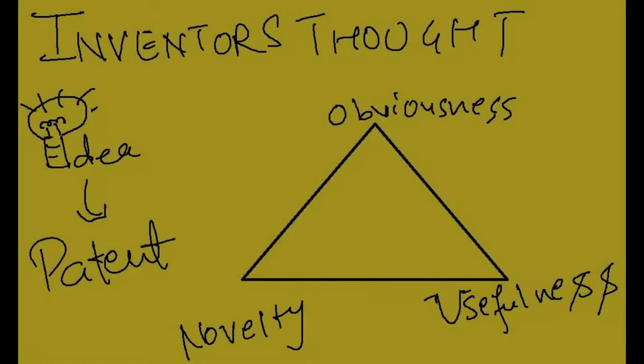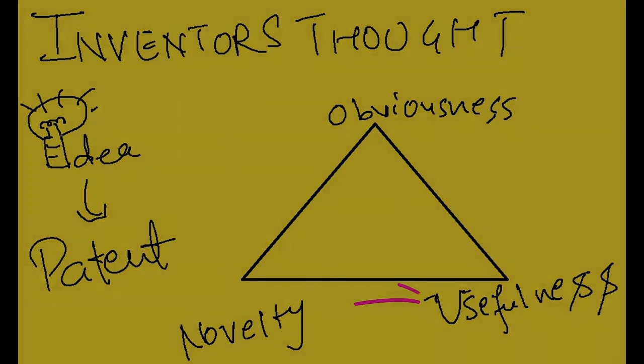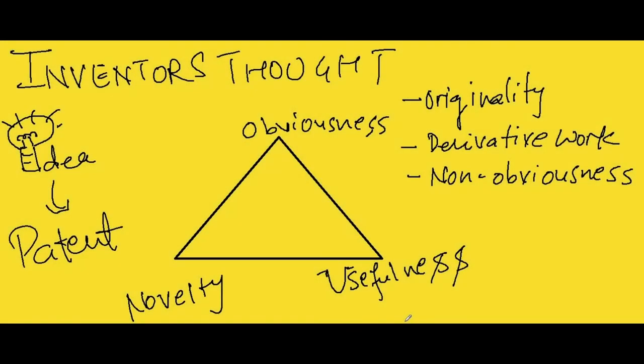Hello viewers, welcome to the Inventors Thought. For making any idea as a patentable idea, we need to take care of three key parameters. First one is obviousness, the second is novelty and the third one is usefulness of an idea. Let's look into the details of each key parameter.